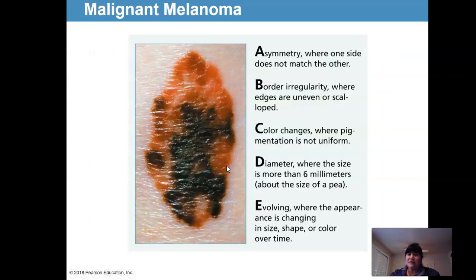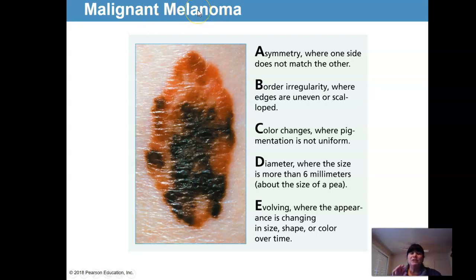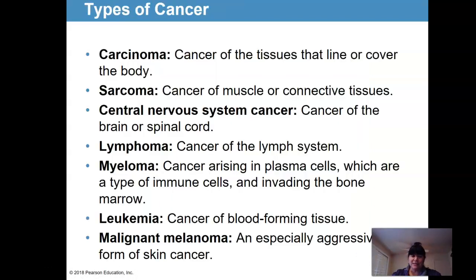We've touched on skin cancer before, but here's an example. Most skin cancers are very treatable — they grow really slow, so not a big deal. Here's an exception: melanoma. It's skin cancer of the melanocytes, the mole cells. Melanoma is incredibly aggressive — an especially aggressive form of skin cancer.